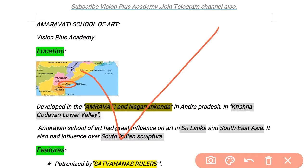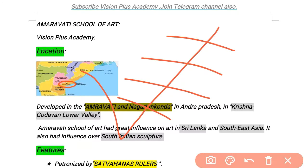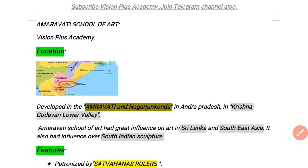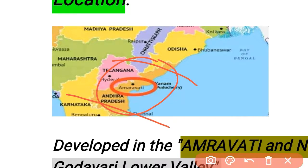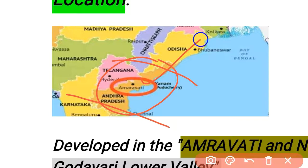The four important rivers of the Eastern Coast are the Mahanadi, Godavari, Krishna, and Kaveri. If we look at the map, we can see two important rivers flowing through this region — Godavari and Krishna. The land area located in the Amaravati and Nagarjunakonda region has been developed by the Amaravati School of Art.